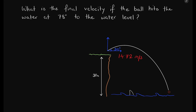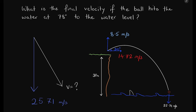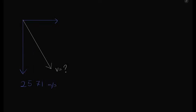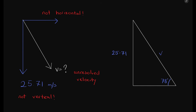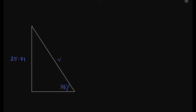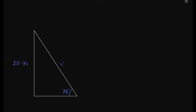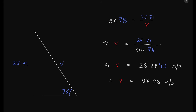They did not ask for the horizontal or the vertical velocity — they are asking for just the velocity, which means you have to find the actual resultant velocity. The vertical velocity at the end is 25.71 meters per second. In the diagram, the white arrow is the unresolved velocity we need to find. Using a right-angle triangle with an angle of 78 degrees, the hypotenuse is the velocity we need, and the vertical side opposite the 78 degrees is the vertical velocity. Using sine 78 equals 25.71 divided by velocity, the actual velocity is 28.28 meters per second.